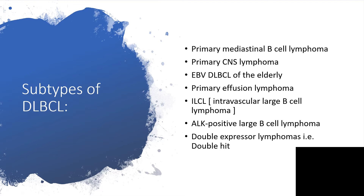Subtypes of diffuse large B-cell lymphoma include primary mediastinal B-cell lymphoma, primary central nervous system lymphoma, Epstein-Barr virus diffuse large B-cell lymphoma of the elderly, primary effusion lymphoma, intravascular large B-cell lymphoma, anaplastic large B-cell lymphoma, and double-hit lymphoma.